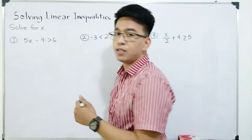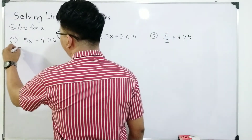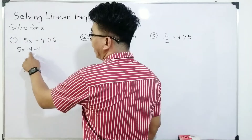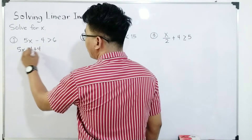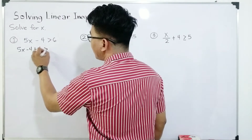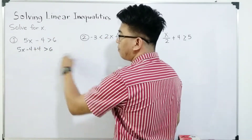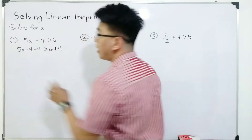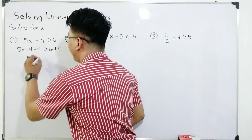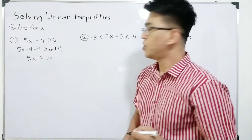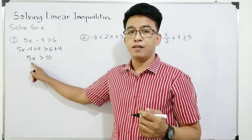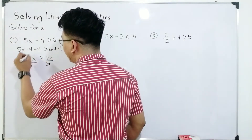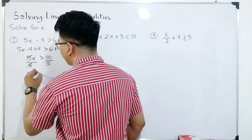To remove this negative 4, we will use API. So we will have 5x minus 4 plus 4 — this is our way to remove negative 4 using the additive inverse of negative 4. So we have 5x minus 4 plus 4 is greater than 6, but we also need to add 4 to the other side of the inequality, so we have plus 4. Simplifying the left side gives us 5x is greater than 10. After that, we need to remove 5 so that we can have the value of x. To remove 5, we will divide both sides by 5. Cancel and cancel. Your answer is x is greater than 2.